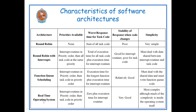We have specified all four different software architectures and their different characteristics, showing how they perform in each architecture. The four architectures are: round robin architecture, round robin with interrupts architecture, function queue scheduling architecture, and real time operating system architecture.